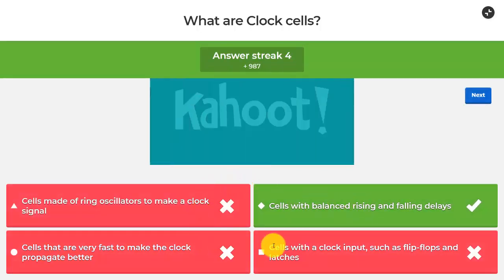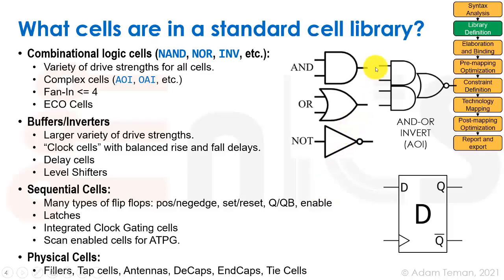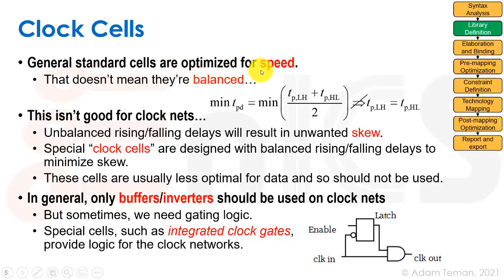So the other ones are just wrong answers. Let's go and see our definition of clock cells. General standard cells are optimized for speed and that doesn't mean that they're balanced. We're going to usually try to minimize the low to high and the high to low propagation delays. That's not necessarily the balanced cell where the low to high and the high to low propagation delays are equal. This is really not good for clock cells because unbalanced rising and falling delays will result in unwanted skew. So we have specialized cells, which are called clock cells, which are designed with balanced rising and falling delays. They're usually less optimal for data and so we usually have a don't use on them. Usually you only want to use buffers or inverters on the clock tree. There are certain times when we're going to put other types of logic, especially clock gating cells, integrated clock gates, which we will discuss in the next lecture.